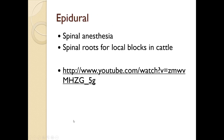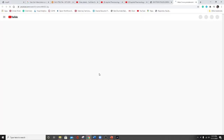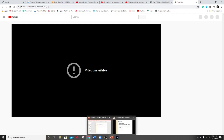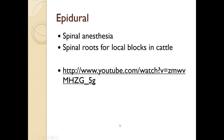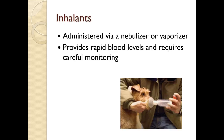Epidurals involve spinal anesthesia or injections into the spinal roots for local blocks, used in cattle. There is a YouTube video available — if you copy and paste that link you should be able to see how spinal anesthesia is performed. It's actually fairly easy to find the correct location and inject, but we do want sterile prep for this as well.